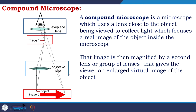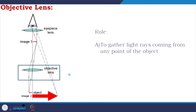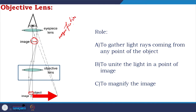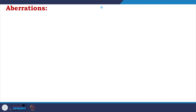The compound microscope — with a series of lenses — becomes a real microscope. The role of the objective lens is to gather light rays coming from any point of the object, unite the light at a point of image, and magnify it. This magnification function of objective lenses is something we have studied at the 10th and 12th level.